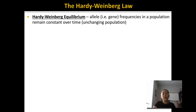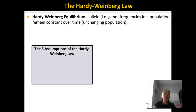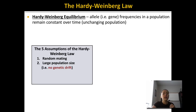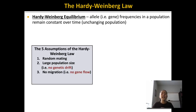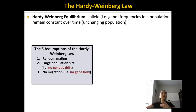In order for a population to be in equilibrium, it must meet five assumptions. First, there has to be random mating within the population, so the mixture of genes is random. Second, the population must be large — if it is large, there will be no genetic drift. Third, there has to be no migration; individuals cannot be moving in and out, making it a closed system with no gene flow.